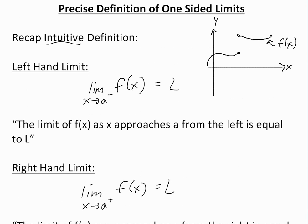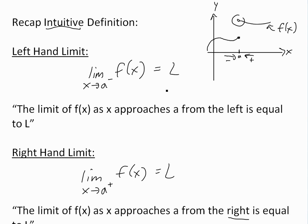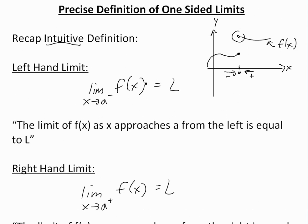Looking at it graphically, if you have this function f of x and this is a, as you're approaching a from the left side it means approaching from that side, and you get this value of f of x. But if you approach from the right side, you get a different value — so that's basically the intuitive definition, but now I'll go over the precise definition.